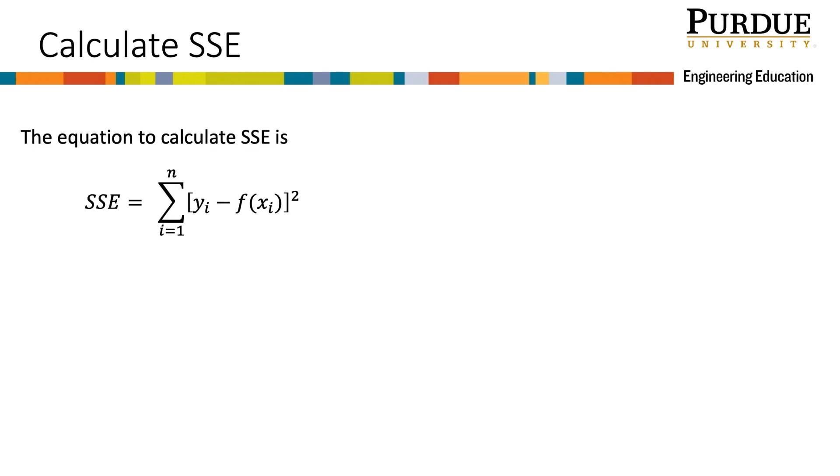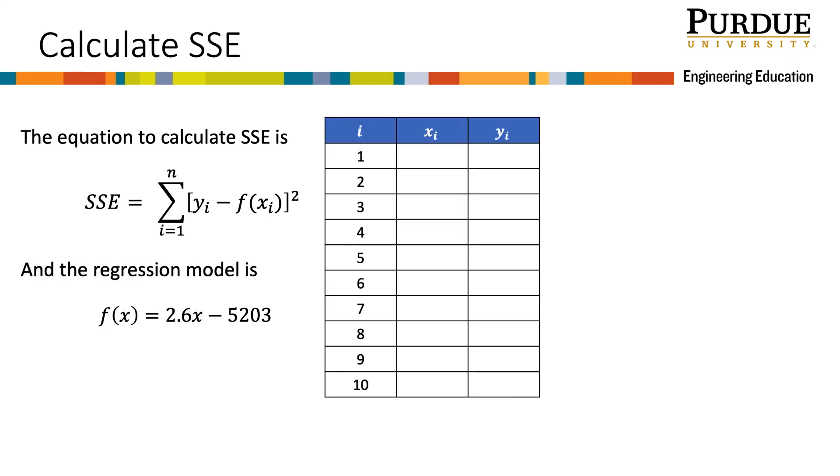So now we need to calculate SSE and SST in order to calculate r squared. The equation to calculate SSE is the sum of the squared differences of all the actual data points y sub i and the modeled points f of x sub i. Let's apply this to our example. We will do this by using a tabular approach. I will use unrounded values in my calculations, then round to a reasonable precision to display answers. I will begin using all of my actual data points. Notice that I have labeled these x sub i and y sub i. That means they are the real data points.